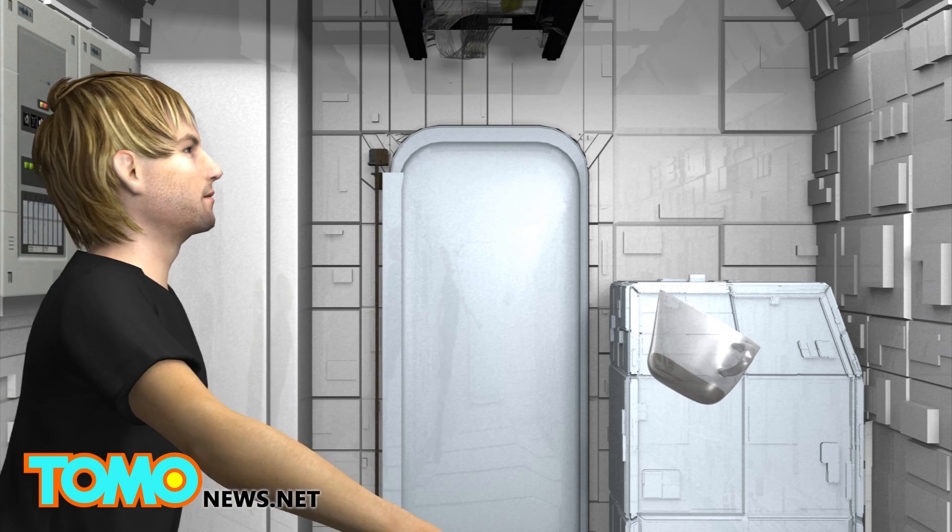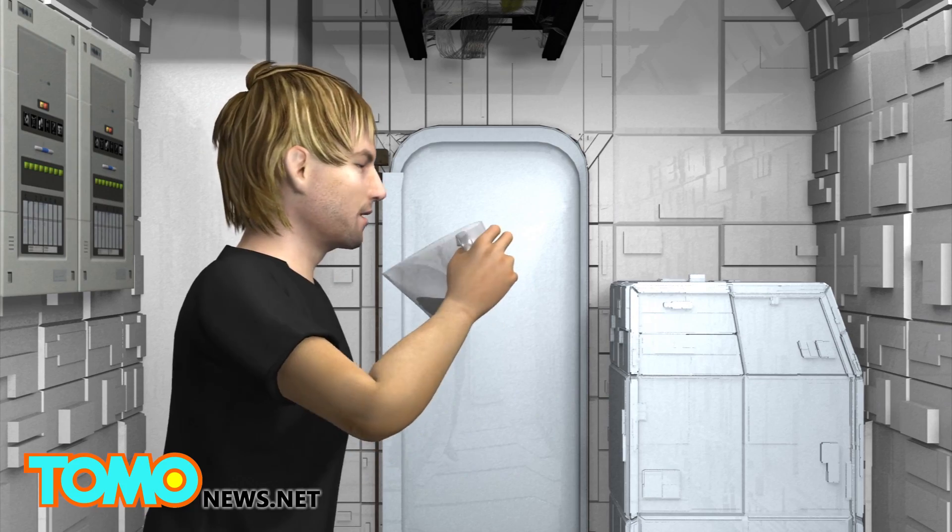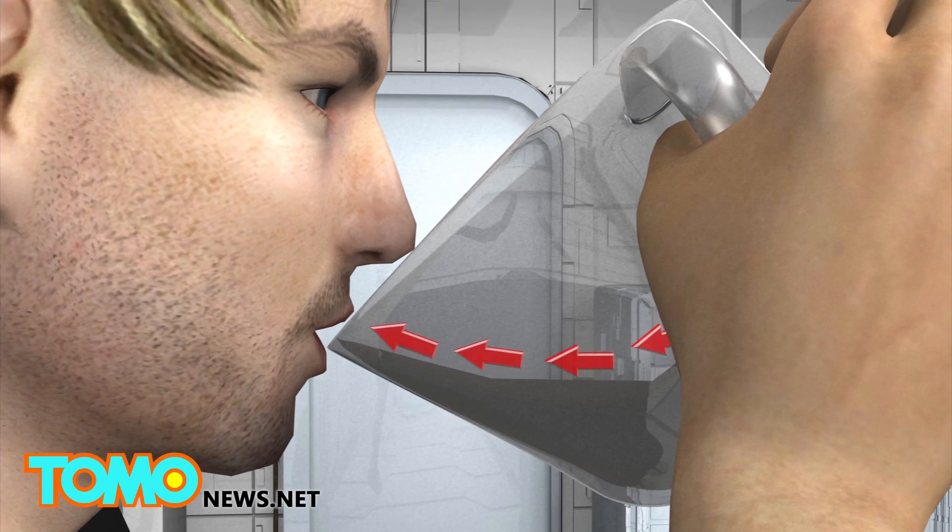The narrow corner of the Zero-Gravity Espresso Cup and the mouth of the astronaut form a capillary connection. The surface tension automatically pulls the coffee towards the astronaut in low-gravity environments.